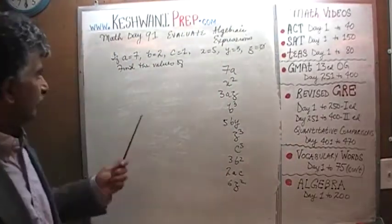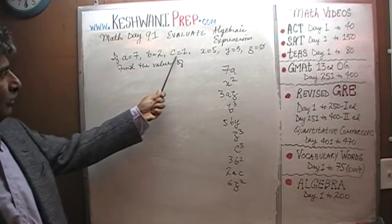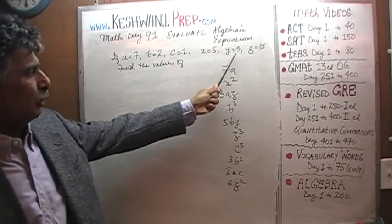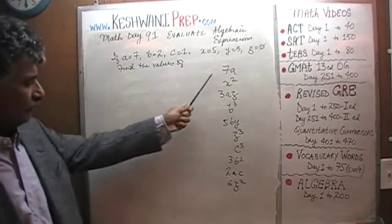Here's what's given to us. We are told that A is equal to 7, B is equal to 2, C is equal to 3, A is equal to 1, X is equal to 5, Y is equal to 3, and finally Z is equal to 0. Then what are the values of the following expressions?